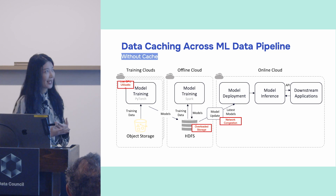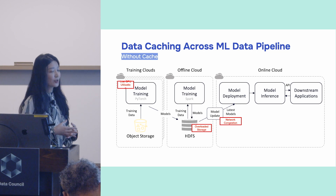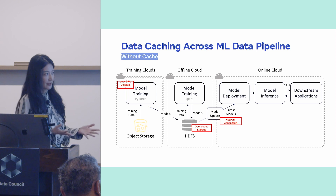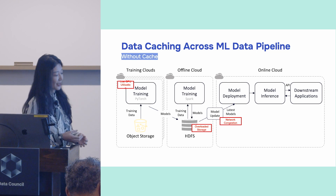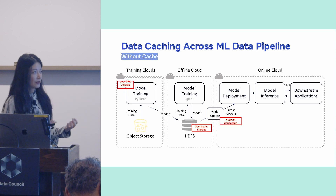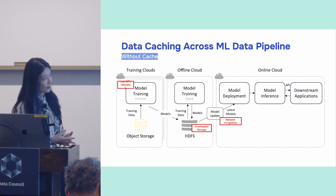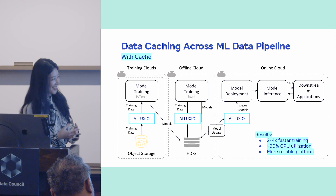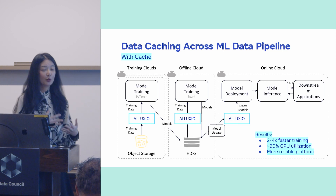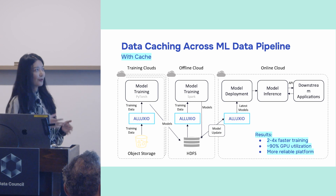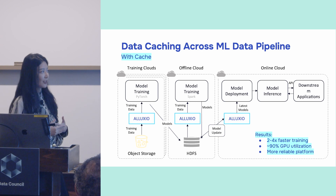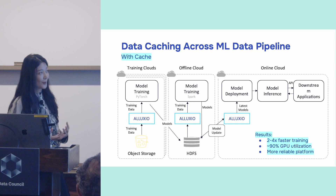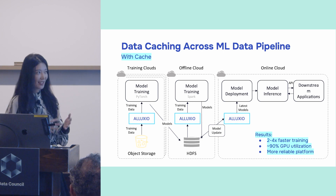When thousands of applications retrieve the latest model — and LLMs are big — model updates create pressure on HDFS job failures and network. By having Alluxio as a cache in the middle, they achieved two to four times faster training. GPU utilization went from 50% to 90%. And they now have a more reliable platform. They are running all of this in production.